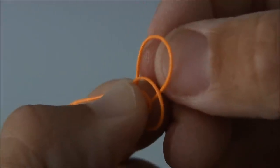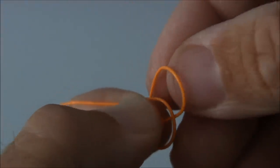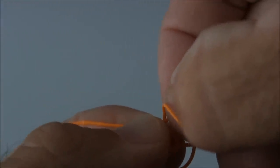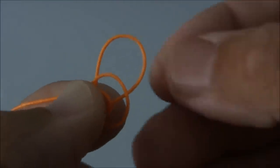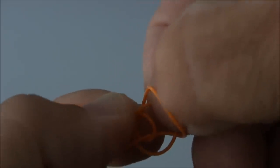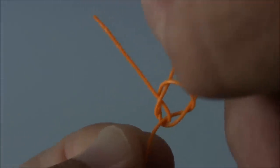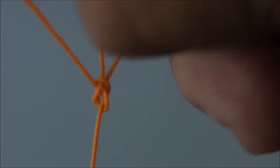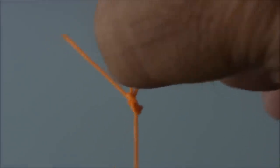Now we're going to reach from in here from behind. We're going to grab this loop, that second loop we made. So reach in behind, grab that, and just pull that out and that will form your loop. And as you pull it down tight, there you have your perfection loop.